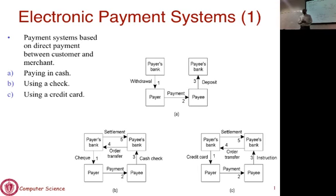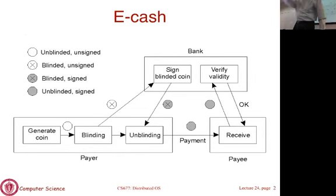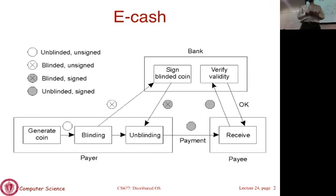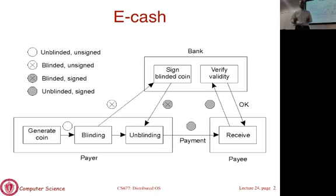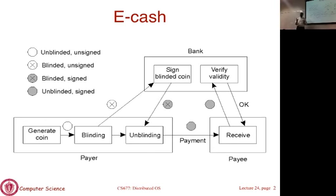People have thought about using electronic cash to give you properties similar to actual cash — whereby you can pay electronically for the convenience of electronic payments, but also have the advantage of anonymity, just as with physical cash where no paper trail is left. Here is the process at the level of principle for how this is done.